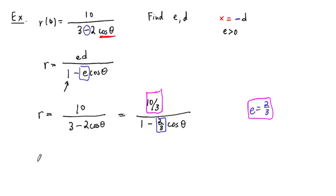So our R, obviously, to get from 2 thirds to 10 thirds, has to be multiplied by 5. So this is 5 times 2 thirds over 1 minus 2 thirds cosine of theta.